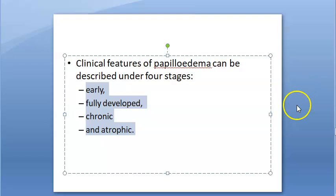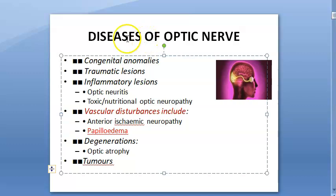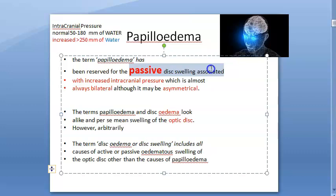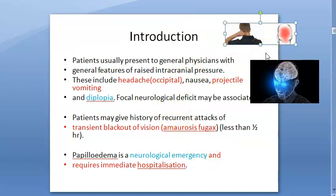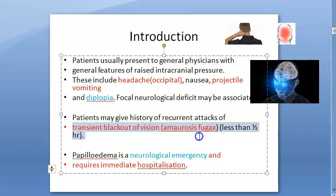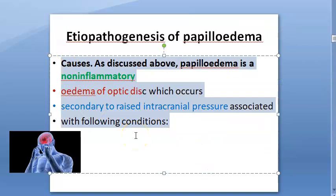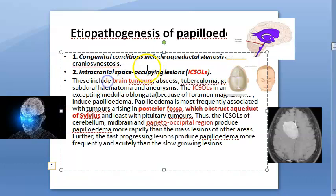In this video we look at the four stages of papilledema. As a recap, it is a disease of the optic nerve - a vascular disturbance involving passive disc swelling associated with raised intracranial pressure, usually bilateral and asymmetrical. These patients present with occipital headache, nausea, projectile vomiting, diplopia, focal neurological deficit, and transient blackout of vision called amaurosis fugax. This is a neurological emergency requiring immediate hospitalization.